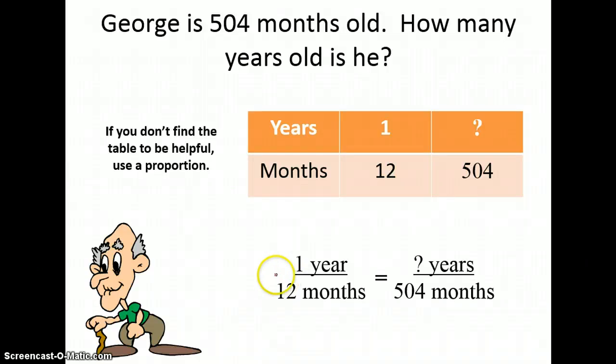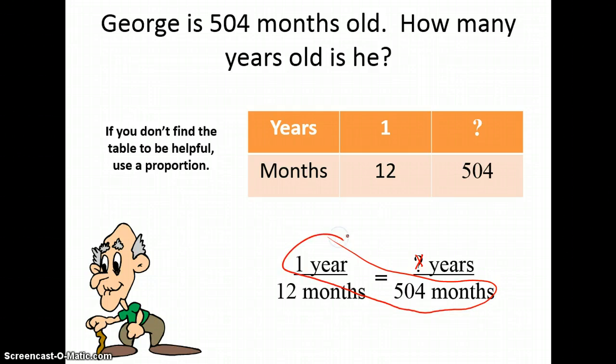One year to 12 months equals x years to 504 months. And in order to solve this, since I don't know what to multiply 12 by to get to 504, I'm going to cross multiply. One times 504 equals 504. And 12 times some amount of years is going to equal 12x.